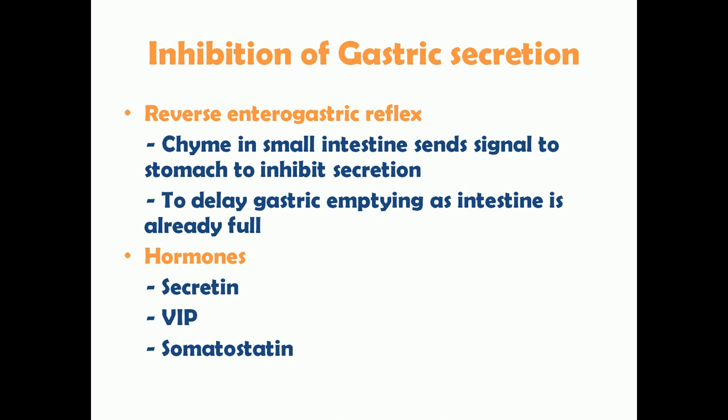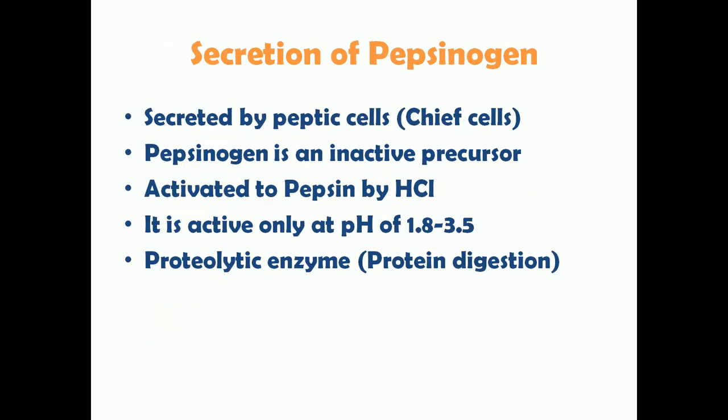The second mechanism of inhibition involves hormones such as secretin, VIP (vasoactive intestinal peptide), and somatostatin. Secretin, while mainly important in regulating pancreatic secretion, also inhibits gastric secretion. This is an important point to remember.